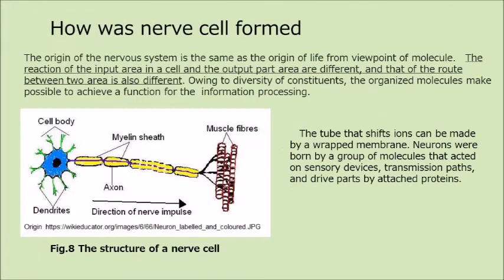The origin of the nervous system is the same as the origin of life from the viewpoint of molecule. The reaction of the input area in a cell and the output part area are different, and that of the route between the two areas is also different. Owing to the diversity of constituents, the organized molecules make it possible to achieve a function for information processing. The tube that shifts ions can be made by a wrapped membrane. Neurons were born by a group of molecules that acted on sensory devices, transmission paths, and drive parts by attached proteins.